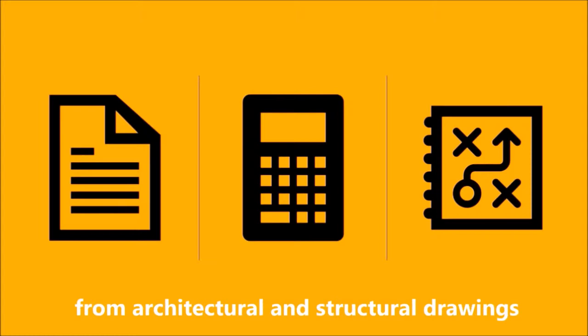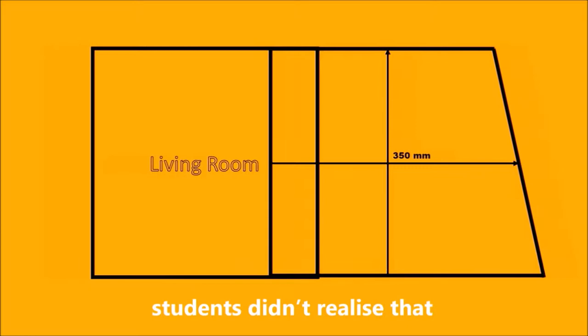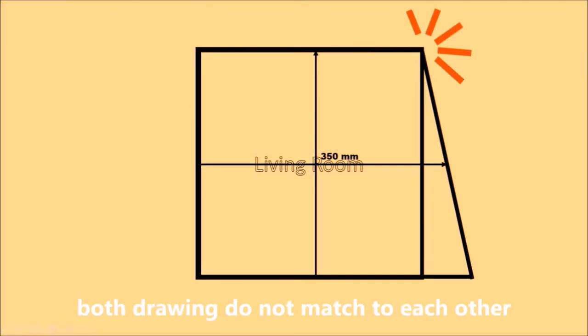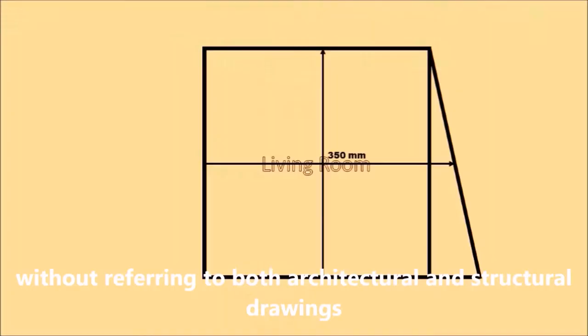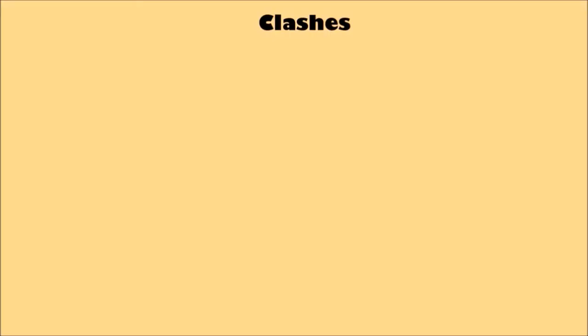Hi everyone, it's Hengs here. Being a QS student, we used to take off quantities from architectural and structural drawings. Yet most of the time, through my observation, students did not realize that both drawings do not match each other. That mismatch between drawings is what we call a clash. It is because students usually take off an element without referring to both architectural and structural drawings, which caused inaccuracies in the result of quantity takeoff.